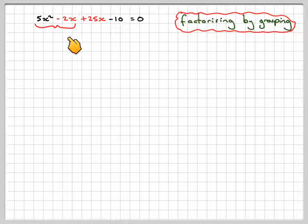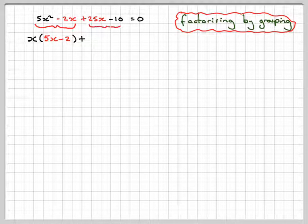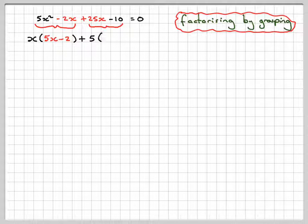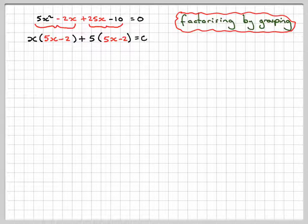Group these two together, there's a common factor of x, and we're going to get in the bracket 5x minus 2. Bring down the plus sign, group these two together, there's a common factor of 5, and again we're going to get 5x minus 2 is equal to 0.